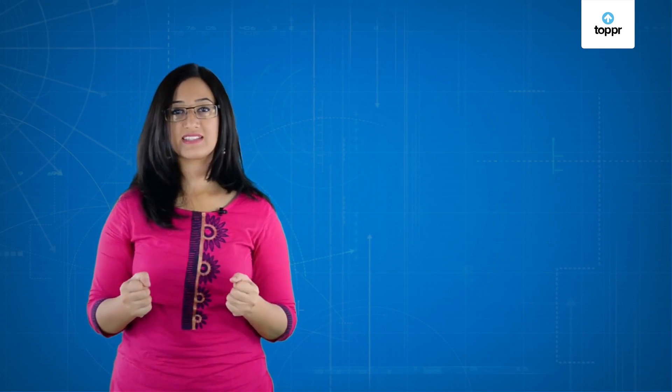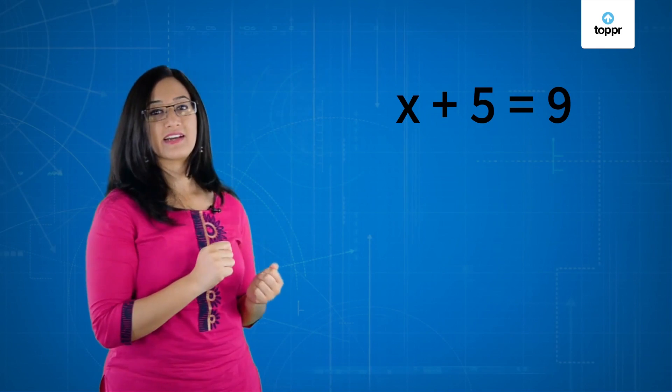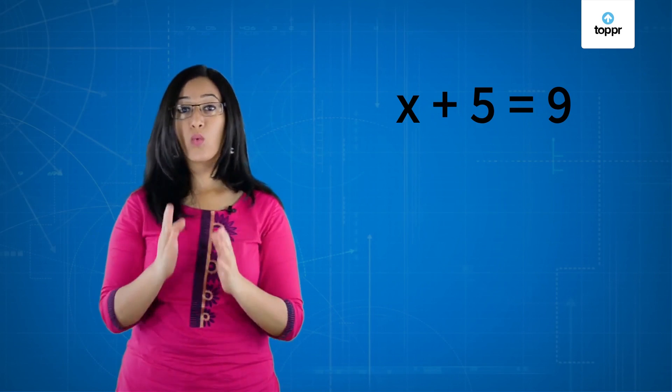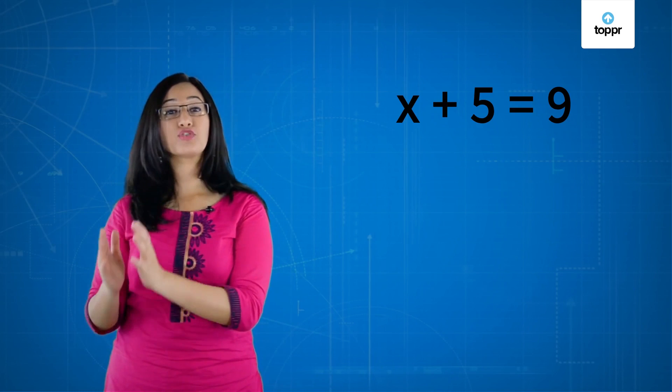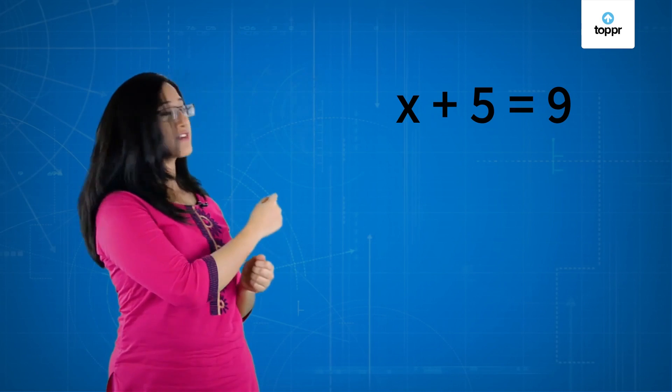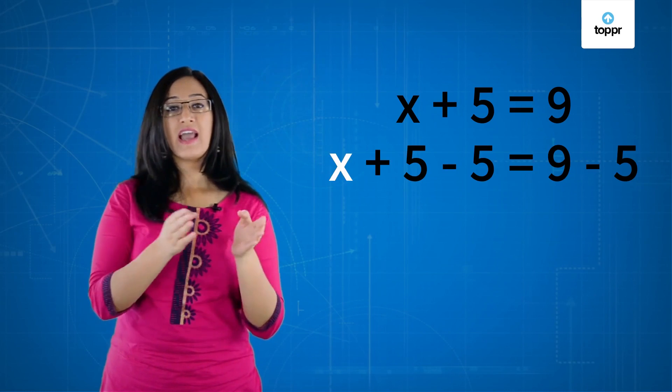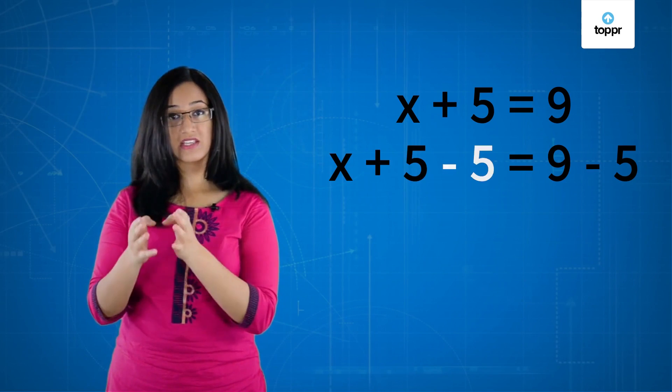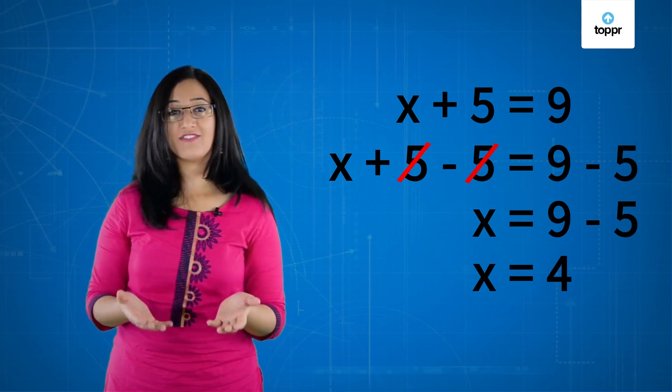Let's try solving one more example. Say we have the equation x + 5 is equal to 9. To find the value of x here, we need to remove the 5 from the left hand side. Remember the rules. Whatever is added to or subtracted from one side of the equation has to be repeated on the other side as well. Accordingly, we have to subtract 5 from both the sides of the equation. This gives us the equation x + 5 - 5 is equal to 9 - 5 and thus x is equal to 9 - 5 that is 4.